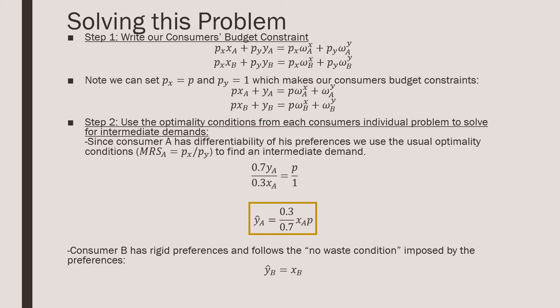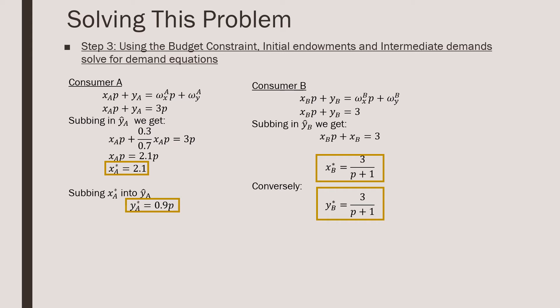And for consumer B, we can't apply calculus to his preferences, so we're going to use the standard no waste condition imposed by the preferences.